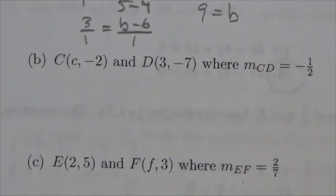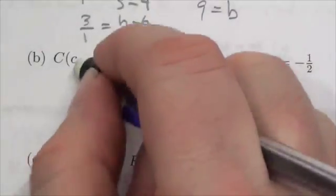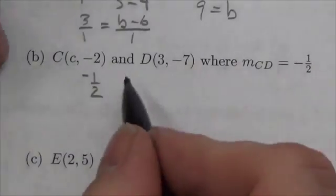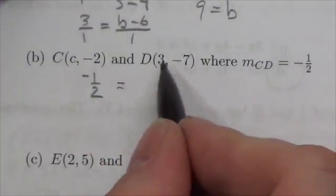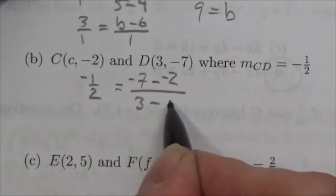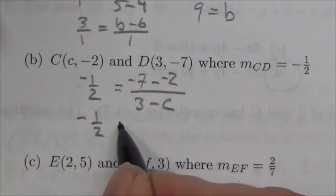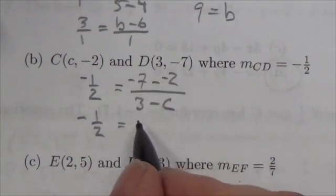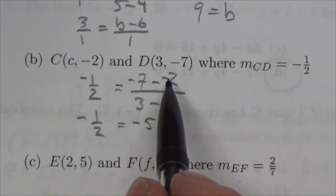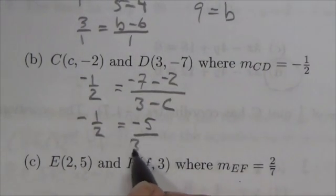We do the exact same thing for question b. This time we know that our slope is negative 1 half, and in this case it's probably going to help us out to put the negative either in the numerator or the denominator. Now right now I'm assuming the numerator. So I will say negative 7 minus negative 2 all over 3 minus c. Difference in the y coordinates, difference in the x coordinates. I'll simplify that a little bit. Negative 7 minus negative 2 is negative 5. Now please pay very careful attention to the negatives. I am subtracting a negative. So negative 7 plus 2 is negative 5 over 3 minus c.